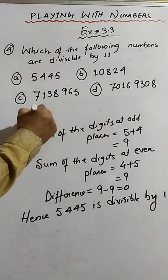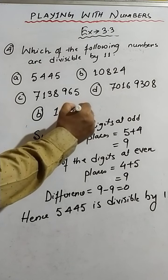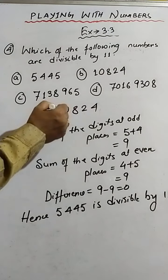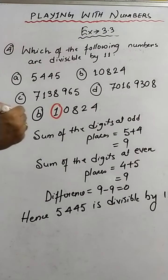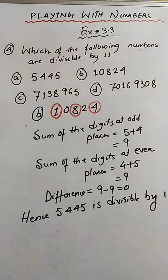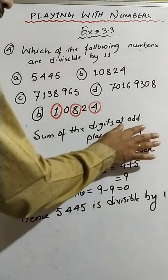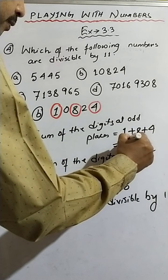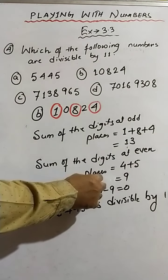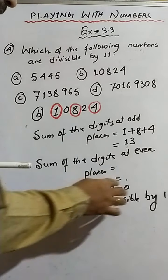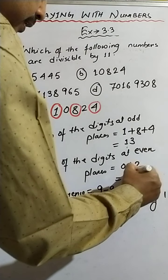Number B is 1, 0, 8, 2, 4. I will circle all the odd places. The digits at odd places are 1, 8, and 4. So the sum is 1 plus 8 plus 4, which is 13. The digits at even places — those not encircled — are 0 and 2. So 0 plus 2 equals 2.